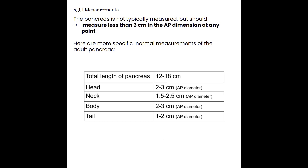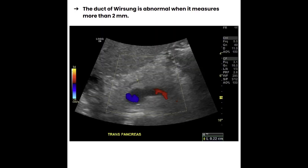Oftentimes, just imaging the pancreas enough will give you a feel for what a normal pancreas size looks like, and it'll be easier to recognize a pancreas that is on the larger side. Sometimes you will be able to see the duct of Wirsung going through the middle of the pancreas. You do want to make sure that you use color on it because the splenic artery can also mimic the duct of Wirsung. So put color on — if it doesn't fill in, then it's most likely the duct. Many ducts that measure more than two millimeters in the pancreas are considered abnormal.